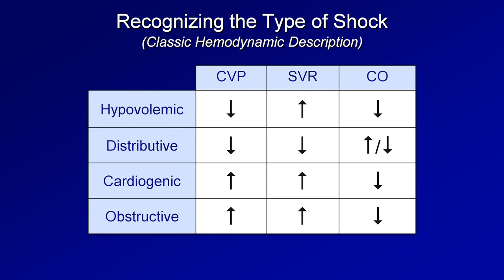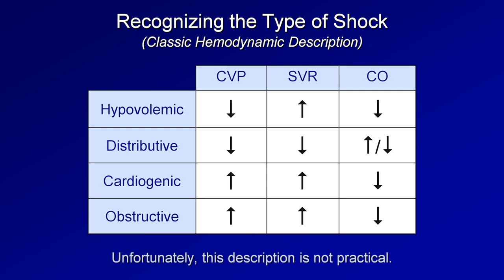I'm not going to go through it line by line because unfortunately this description is completely impractical. CVP, which is generally considered synonymous with right atrial pressure and is an imperfect but acceptable surrogate for left ventricular preload, can be estimated at the bedside from examination of the jugular venous pressure or JVP. However, there is no way to measure or even reliably estimate SVR or cardiac output without performing a relatively invasive procedure.